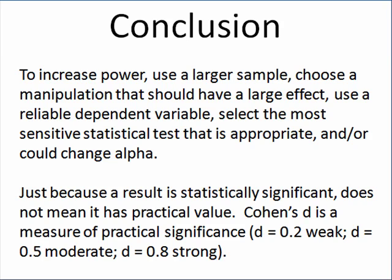If we want to increase our power, we talked about using a larger sample. You should make sure that your manipulation ideally has a large effect. You should use a dependent variable that's reliable and fairly accurate. Select an appropriate statistical test that's sensitive to identifying if a relationship or difference exists. You could also change alpha — increasing alpha increases your type 1 errors, even though you decrease type 2 errors, which is a failure to reject the null when you should. Just because a result is statistically significant does not mean it has practical value, so Cohen's D is a measure of that practical significance.